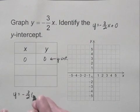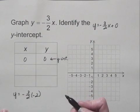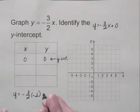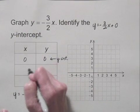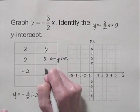When x is negative 2, I get negative 3 halves times negative 2, which is equal to 3. So that gives us the point negative 2, 3.